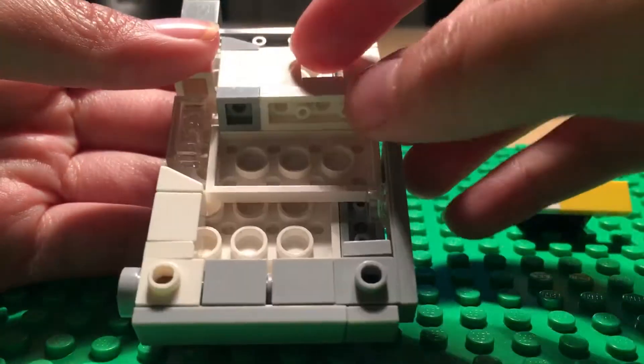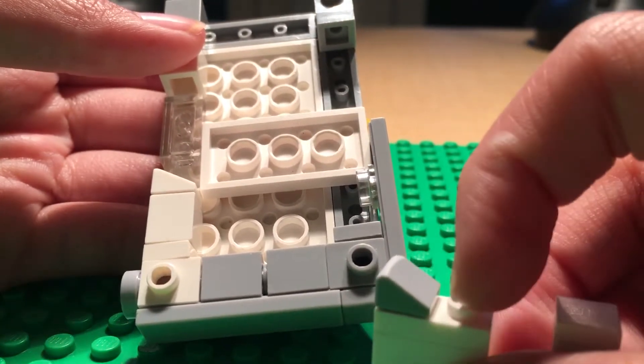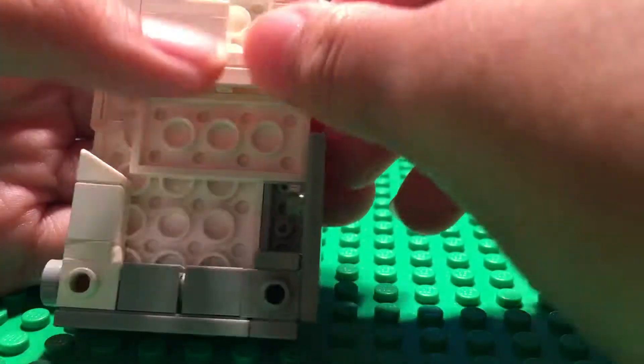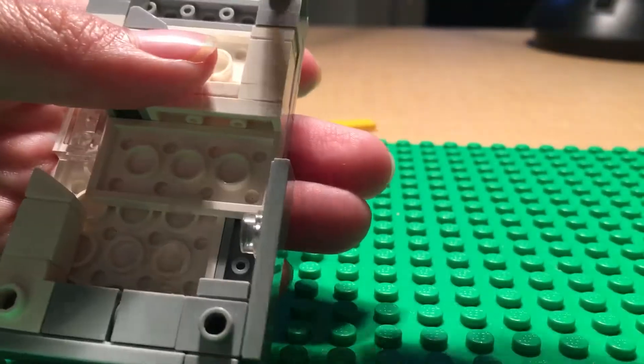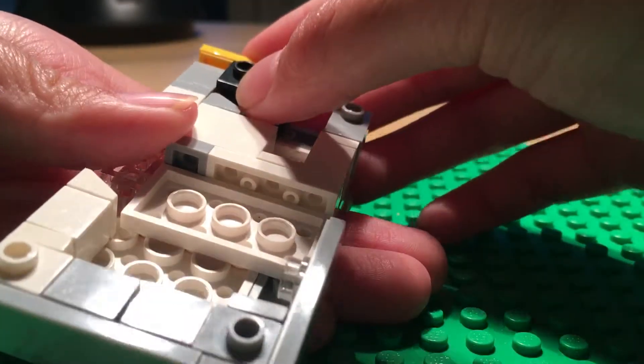You could put a one by one flat there. It doesn't get jammed, it's just kind of harder to pull it out. But yeah, take this piece and put it right there.